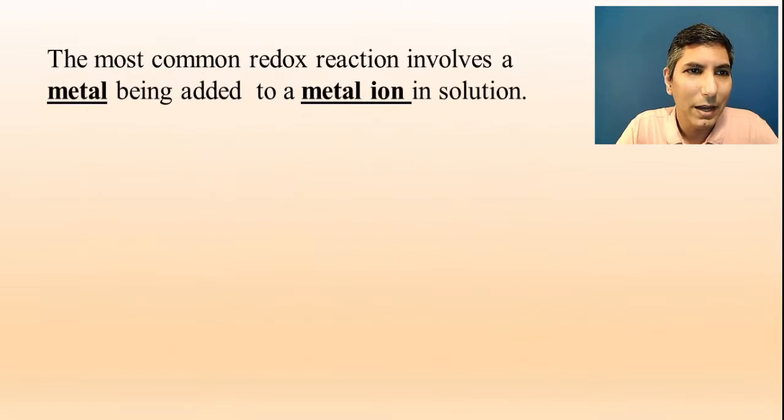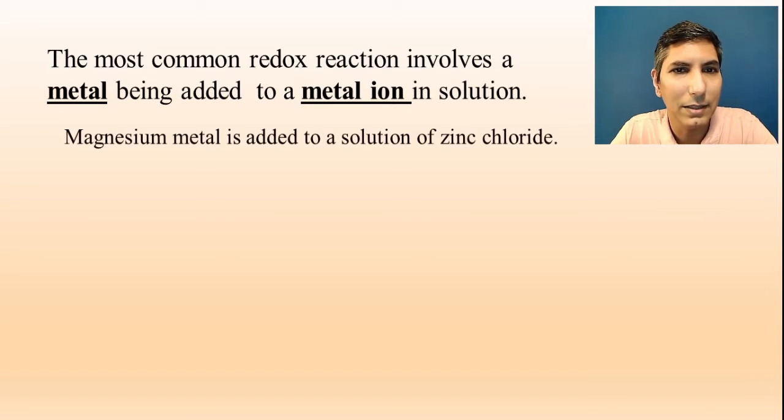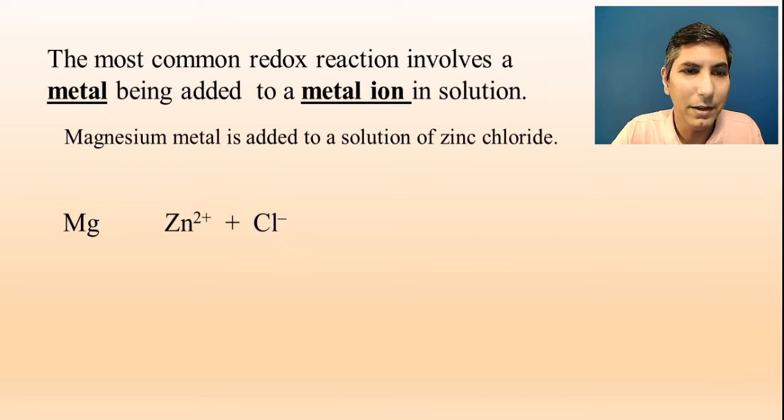Let's take a look at an example. The most common redox reaction that we're going to look at in AP Chemistry involves a metal being added to a metallic ion—metals reacting with metal ions. In this case, magnesium metal is added to a solution of zinc chloride. Let's write the net ionic equation for this and see what's happening. We have magnesium, that's just Mg, and then we have zinc chloride, which is in solution, so we have to write it in its ionized form: Zn2+ and Cl-.